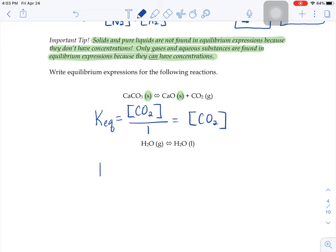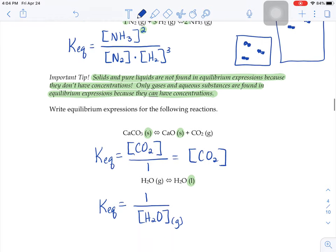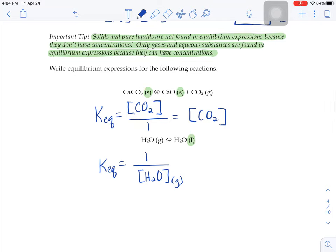We're going to do products over reactants. So our products are liquid water. Liquid water doesn't have a molarity. Solids and liquids don't have molarities. So we don't have anything to put on the products part of our equation here. So I'm just going to put a one as a placeholder. Our reactants are the gaseous water. So I'll put a little G just for clarification of which one we're talking about. That one can have a molarity just like we saw above. The liquid cannot. So here's our equilibrium expression for the gaseous water going back and forth, turning into liquid water.